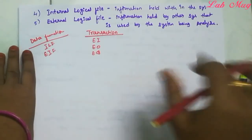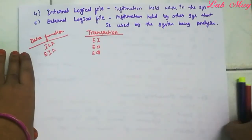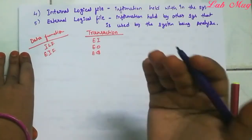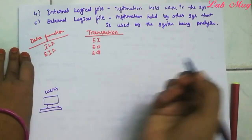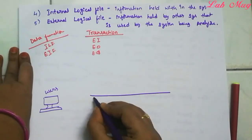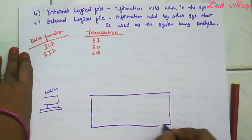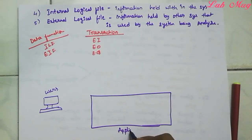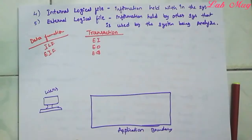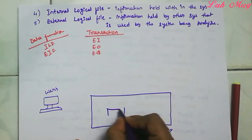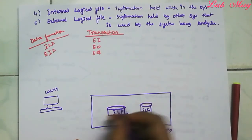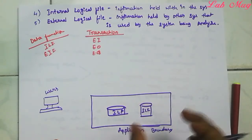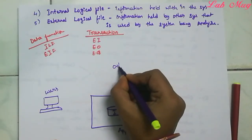The main process of Functional Point Analysis - the algorithm and diagram represent users, systems, or laptops. The application boundary is a key concept here. ILF means Internal Logical File, which is placed inside the application boundary. So ILF is internal logical file placed within the application boundary.